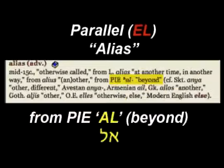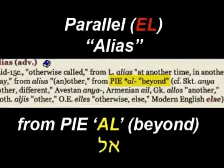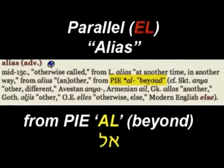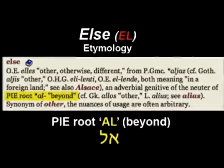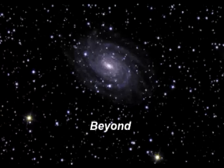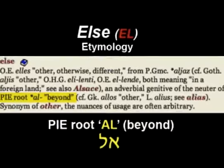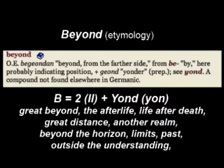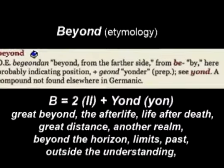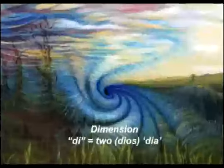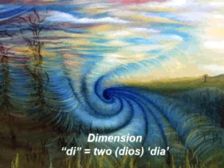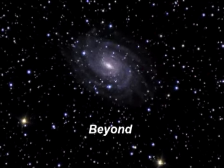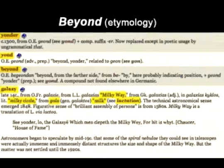You'll notice that 'parallelus' or 'parallelos' tells you to see the word 'alias.' And when we look up the word 'alias,' we find that it comes from the PIE root of a-l, meaning beyond. The etymology of 'alias' also tells us to see the word 'else.' And the etymology of 'else' is from the PIE root of a-l, which means beyond — a synonym for the word 'other.' And when we look at the etymology of 'beyond,' the 'be' equals 'by' plus 'yond,' which is the great beyond, or the afterlife, the great distance beyond our realm — like another dimension, the world that lays beyond our world, which is parallel worlds.